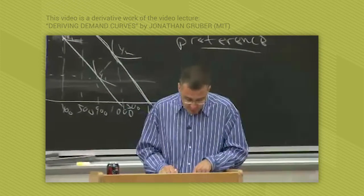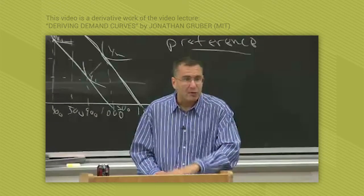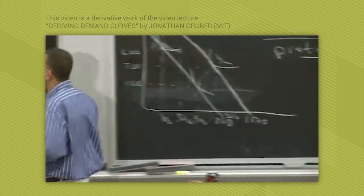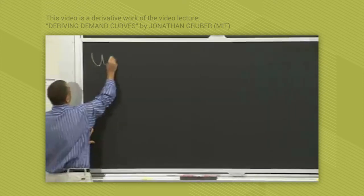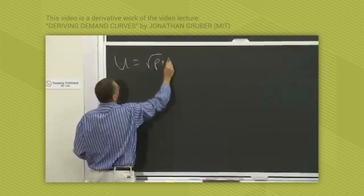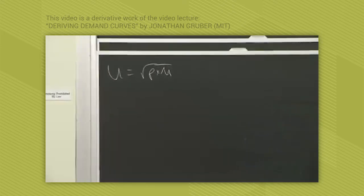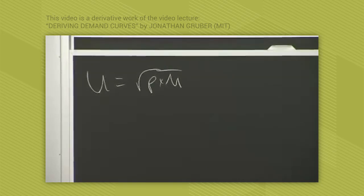So all we've done here—forget the bottom diagram for a second—all we're doing in this top diagram is saying, given your utility is u equals square root of p times m, and given your income and the prices, these are the choices you would make as prices change. Are there questions about that?